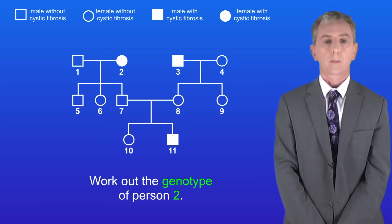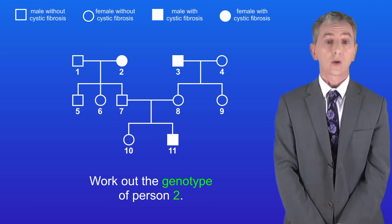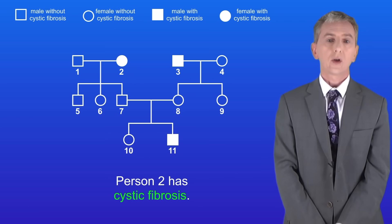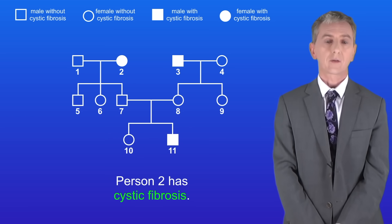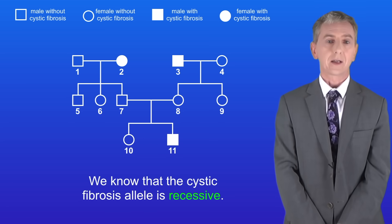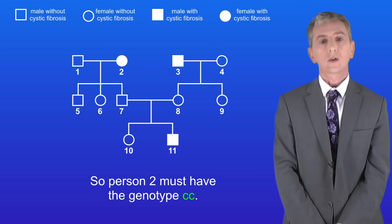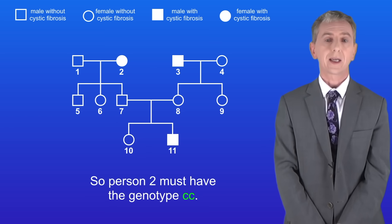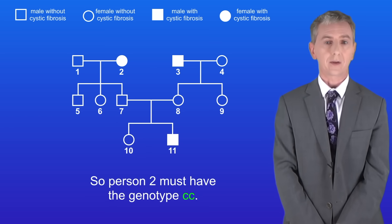Here's the first exam question: work out the genotype of person 2. Well, person 2 has cystic fibrosis and we know that the cystic fibrosis allele is recessive, so person 2 must have the genotype lowercase c, lowercase c.